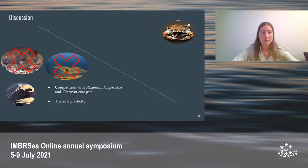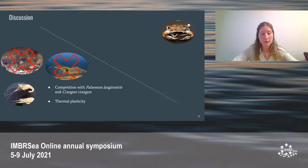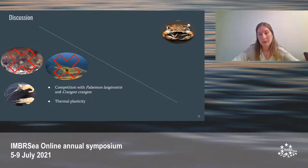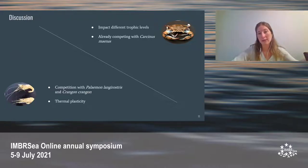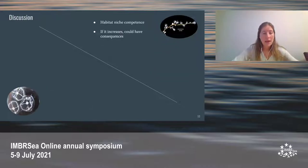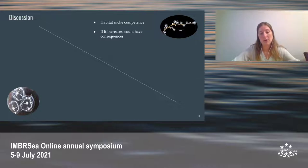Palaemon macrodactylus also has high thermoplasticity, making it resilient to increasing water temperatures and thus favoring its establishment in this ecosystem. Callinectes sapidus has the potential to impact different benthic communities at different trophic levels, which is also dangerous, and is already competing with the crab Carcinus maenas. The impacts of Cordylophora caspia are not well known, but it would most likely have habitat competition. If it increases, it could have major consequences because it facilitates the settlement of other non-indigenous species, such as some mussel species.